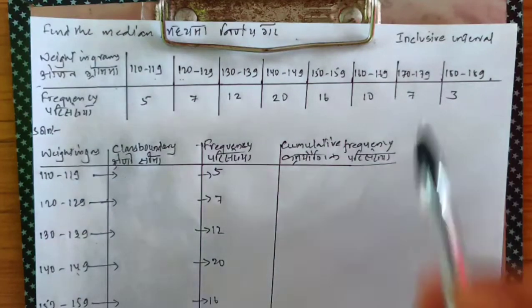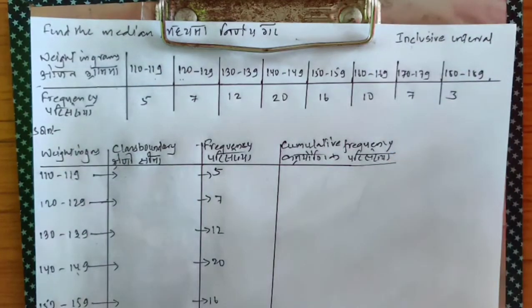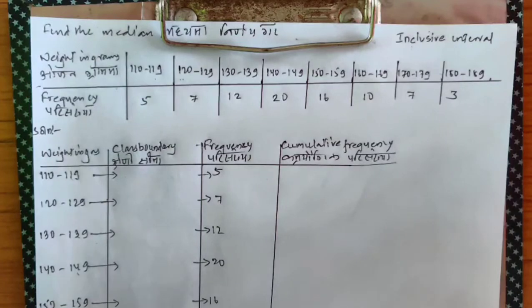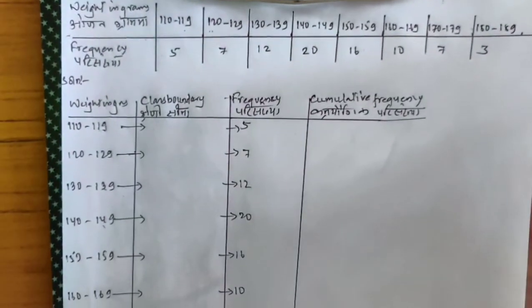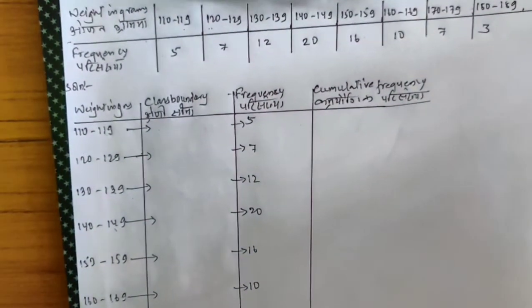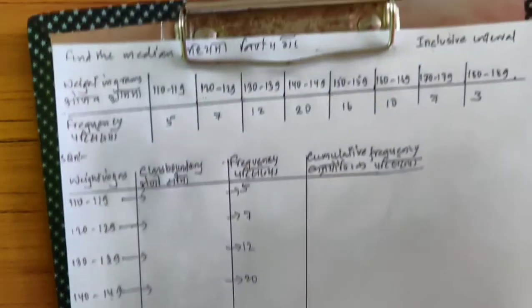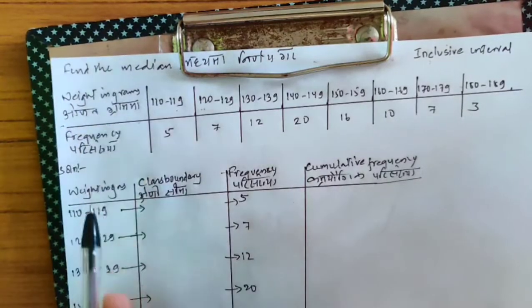Inclusive must be converted to exclusive. By now everyone should be very much aware: exclusive is ready-made, like 0 to 20, 20 to 40; while inclusive is not ready-made — you need to make inclusive into exclusive. We all know the rules. So what's the rule? Let's use the language: weight in grams.